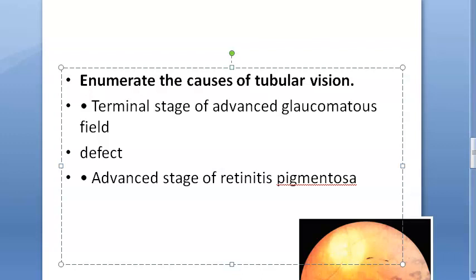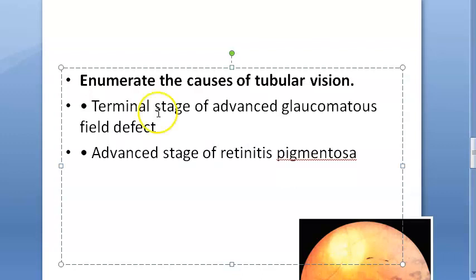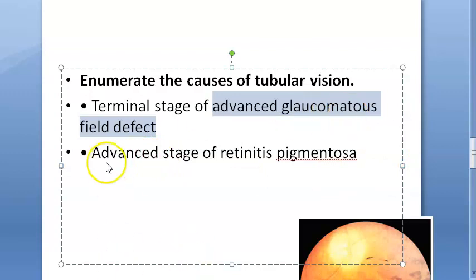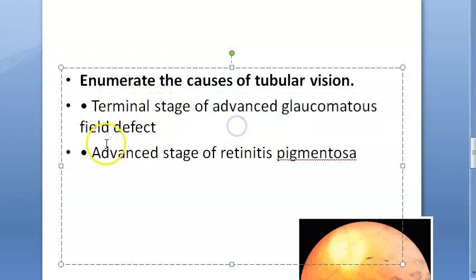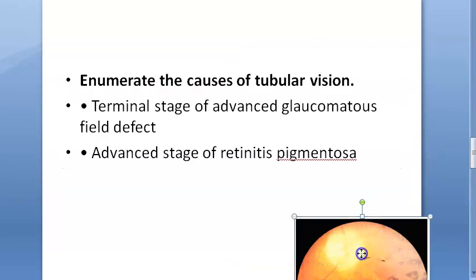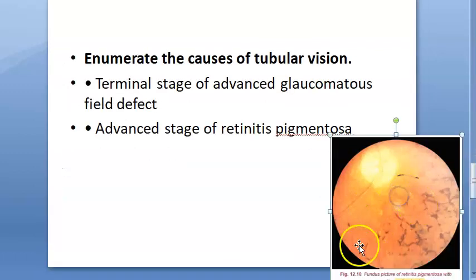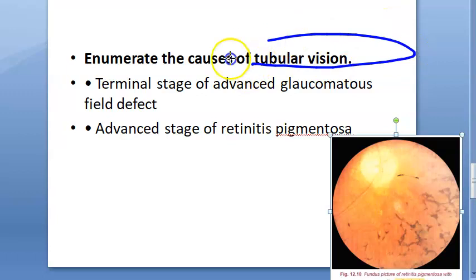The causes: first, glaucoma — advanced glaucomatous field effects. In glaucomatous field effects, you will have all those scotomas, and finally it comes down to tubular vision with a small island of temporal vision as well. The second cause is retinitis pigmentosa.